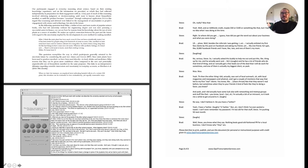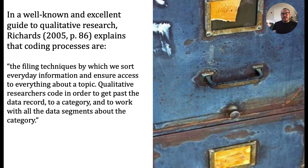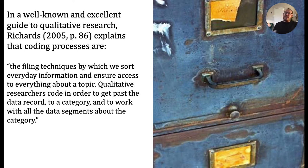Qualitative research is an aesthetic practice. Whether on paper or on computer screens, qualitative researchers are mostly engaged in grouping and ordering, selecting and filtering black text on white backgrounds. We carve our transcripts up into new texts, making more black and white shapes into writing that has a certain rhythm, a certain orderliness in the presentation of its data. Richards explains that coding processes are the filing techniques by which we sort everyday information and ensure access to everything about a topic. Qualitative researchers code in order to get past the data record to a category and to work with all the data segments about the category. In these processes, we are guided by an aesthetic which prizes a particular scheme of taste in the translation and organisation of life rendered in a monochromatic palette.